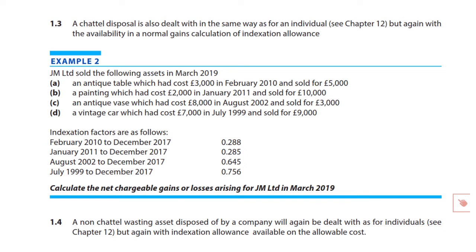Example two: JM Limited making the sales. Calculate the net chargeable gains or losses arising for JM Limited in March 2019, where the company sold four assets. I'd like you to look at each of the four situations and determine what needs to be done — sometimes calculations, sometimes no calculations. Think about what each outcome A, B, C, and D will lead to before continuing.